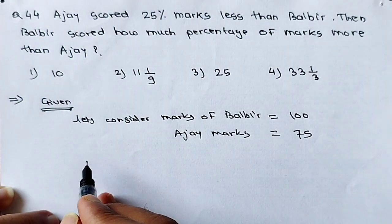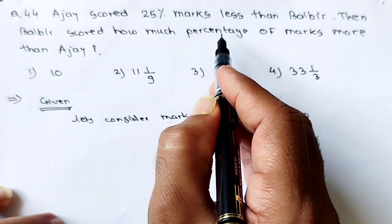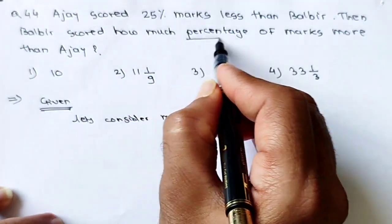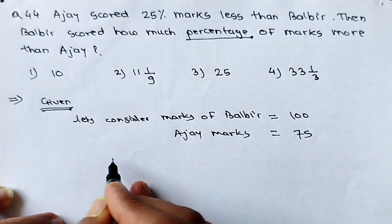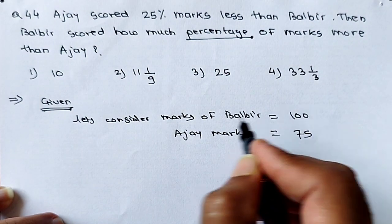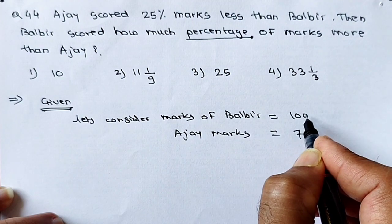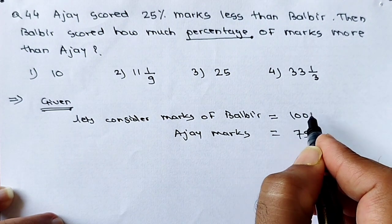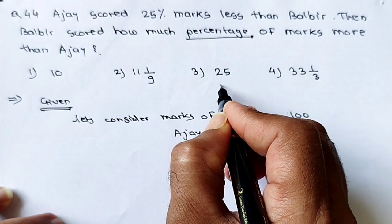Now we have to calculate how much percentage marks are more. We know how many marks are more: 25 marks are more if we consider Bulbier as 100 marks. But this 25 is not a percentage — we need to calculate the percentage. For 75 marks of Ajay, there are 25 marks less. But what will be the percentage if it has 100 marks? Let the marks be X.